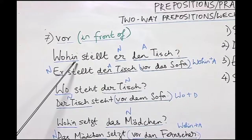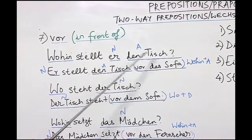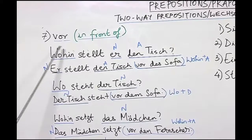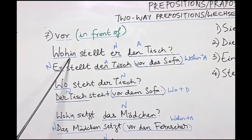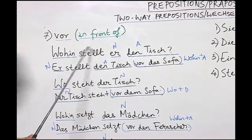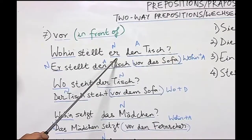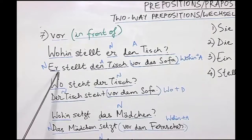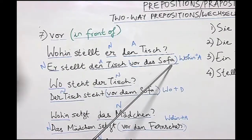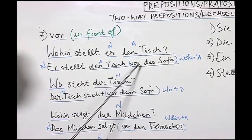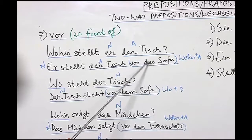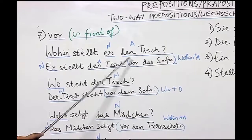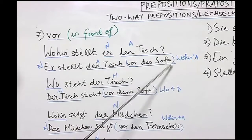Let us look at this question: Wohin stellt er den Tisch? Er stellt den Tisch vor das Sofa. You are already familiar with the concept that with 'wohin' we always form an accusative answer. The verb here is 'stellen', which is an accusative verb, 'er' is the nominative, and 'den Tisch' is the accusative. Here 'vor' is an accusative preposition — there is no change in the article for the noun Sofa. Das Sofa in nominative remains das Sofa in accusative, so 'vor das Sofa' answers the wohin question.